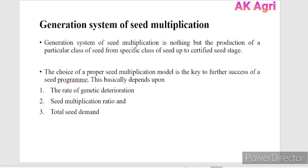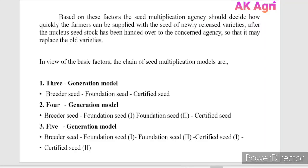Based on these three factors, we can decide which generation system to follow for seed multiplication. The seed multiplication agency should decide how quickly farmers can be supplied with seeds of newly released varieties after nucleus seed stock has been handed over, so that old varieties may be replaced with new varieties.